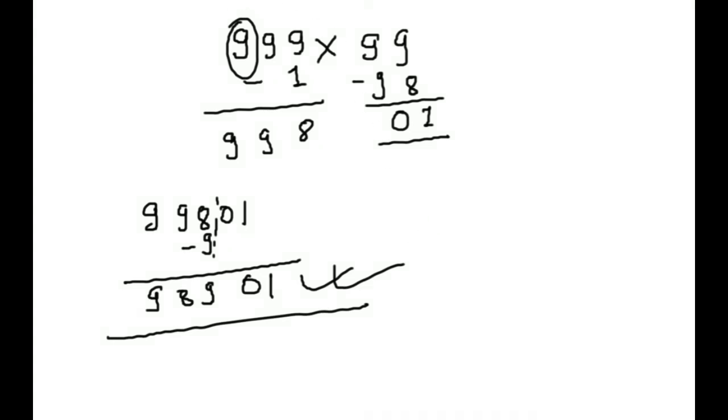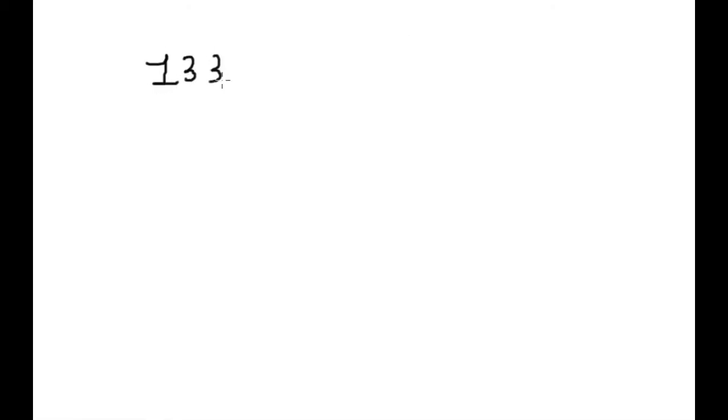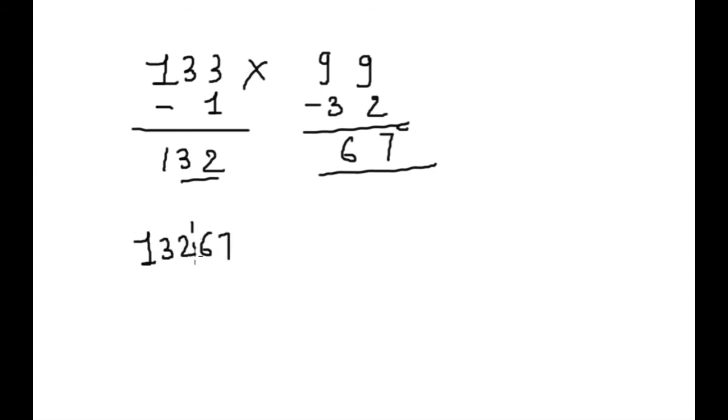133 into 99. Minus 1, 132. This 32, we will subtract from here. 32, 76. We will write 13267. Now, this 1, we will subtract from here. Minus 1. 76131. This is our answer.